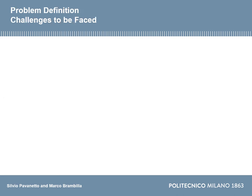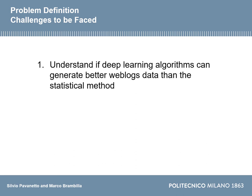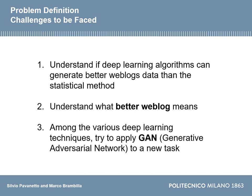The challenges we face in this work are the following. The first is understanding if deep learning algorithms can generate better weblog data than the statistical method, which is our baseline. The second is understanding what 'better weblog' means and which variables to consider. The third is applying a generative adversarial network to a new task, since GANs are usually applied in the computer vision field, and in this case we are applying them to a different scenario.